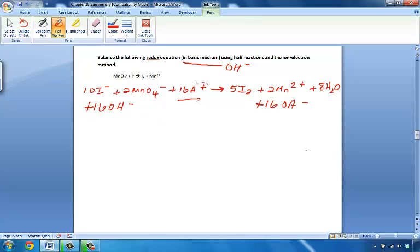Now what happens when we take 16H plus and 16OH minus? We make 16H₂Os. Hence the neutralization. So let's clean up this equation.